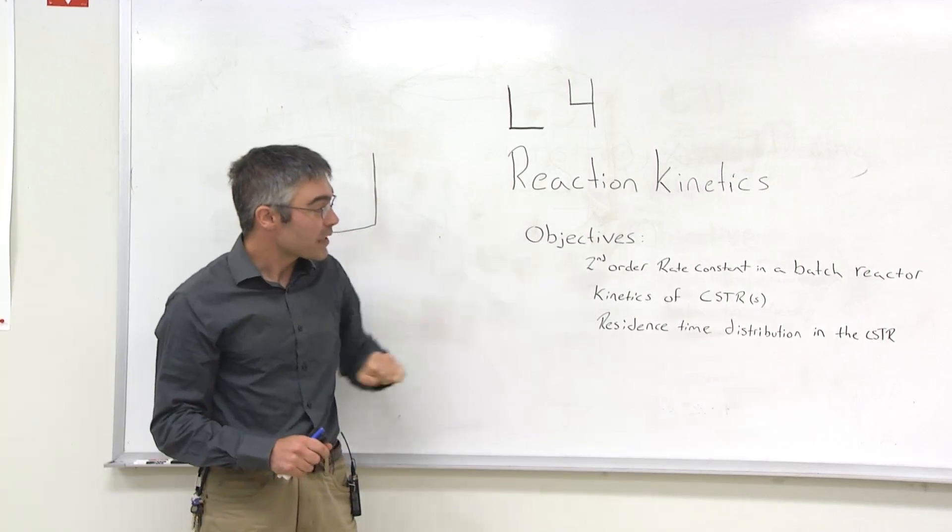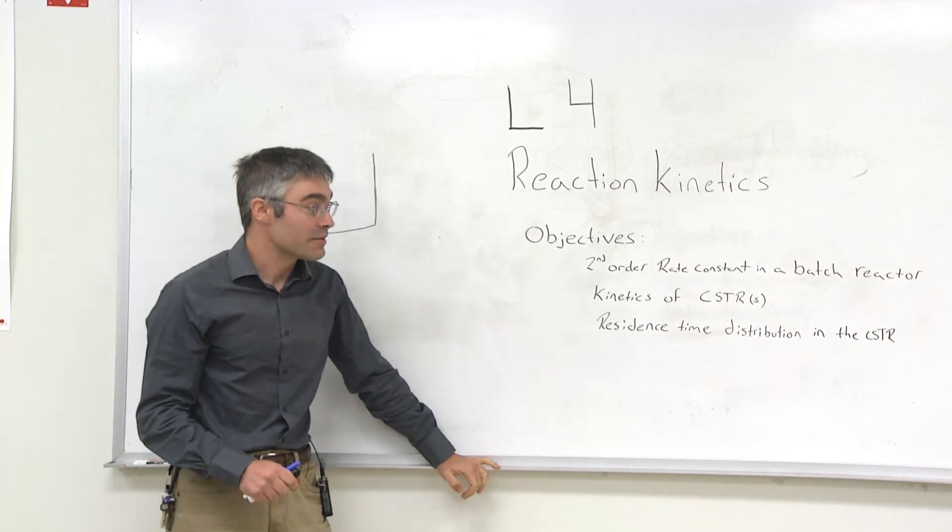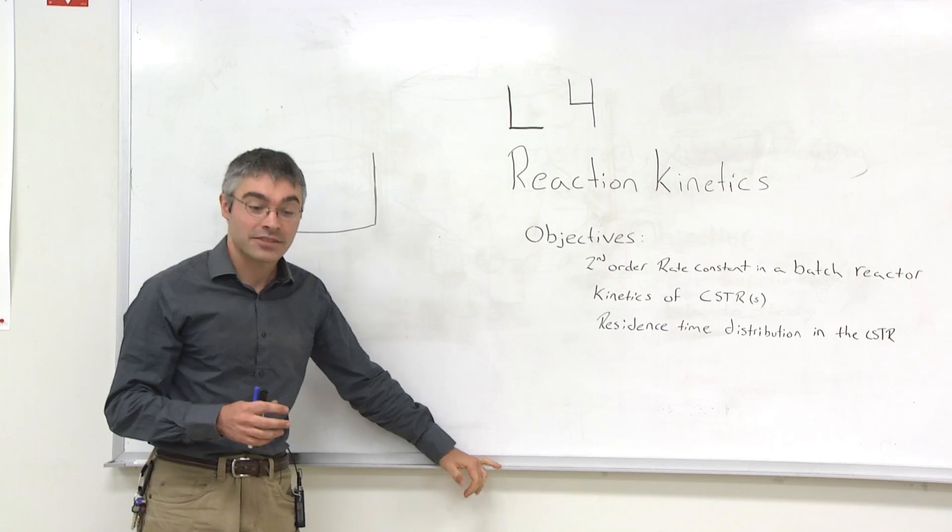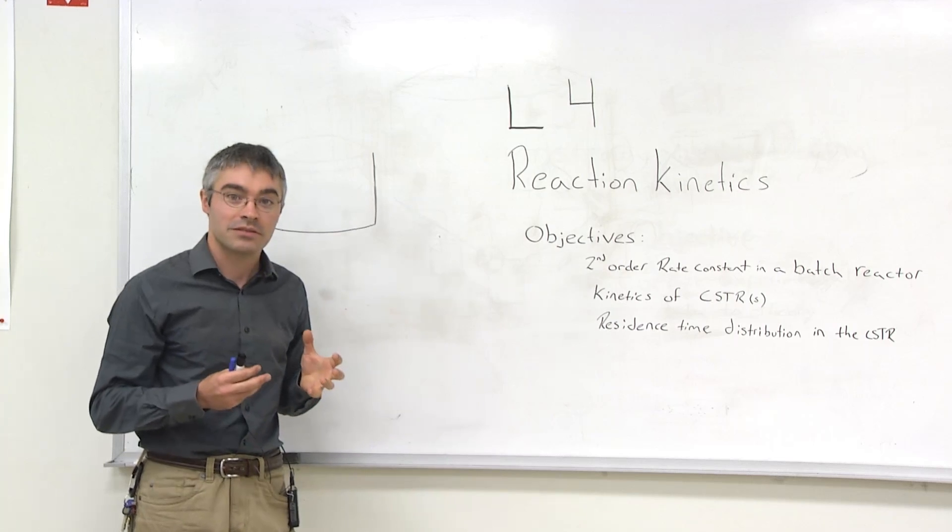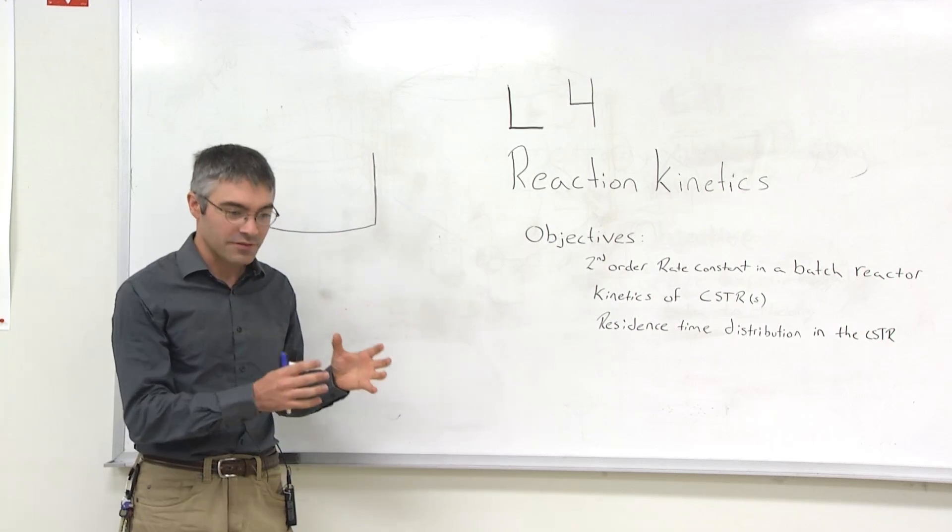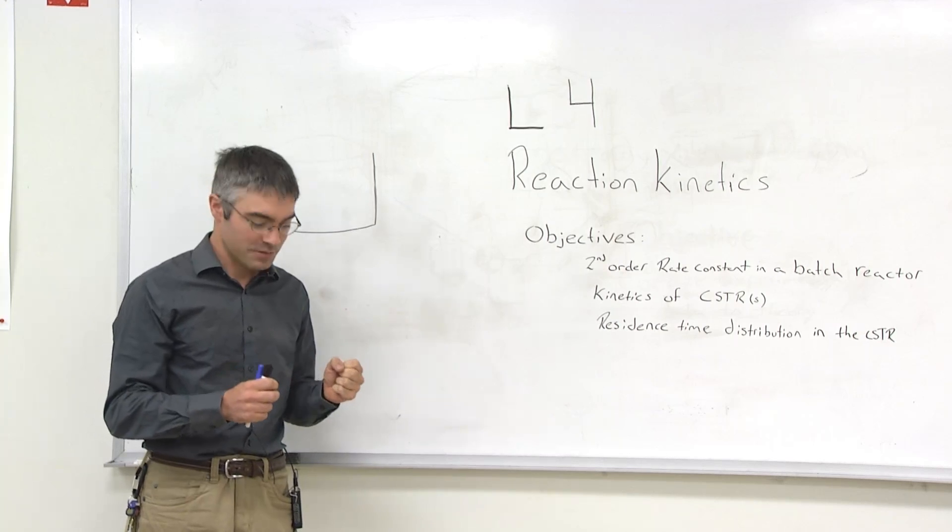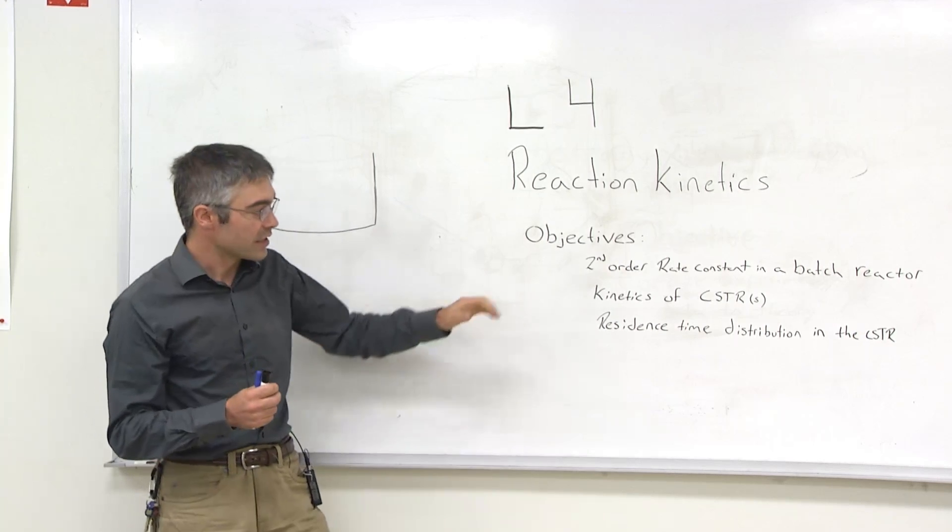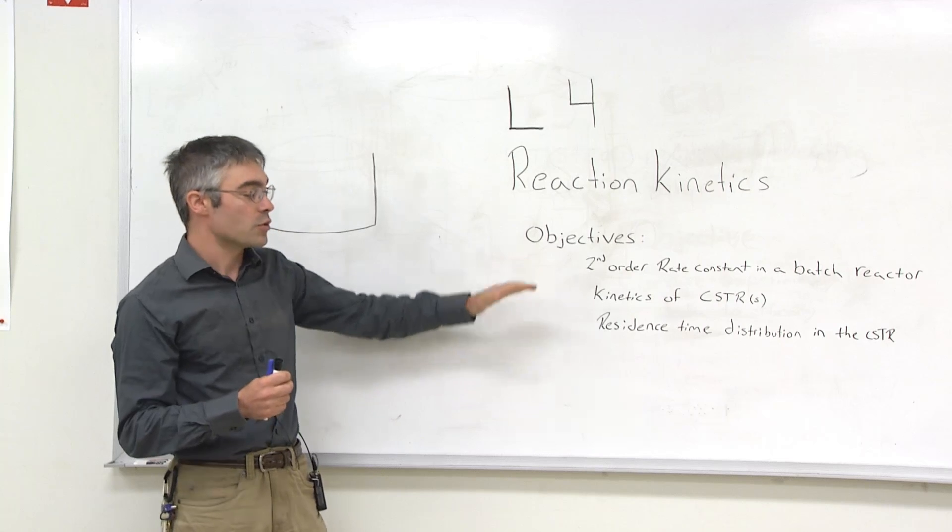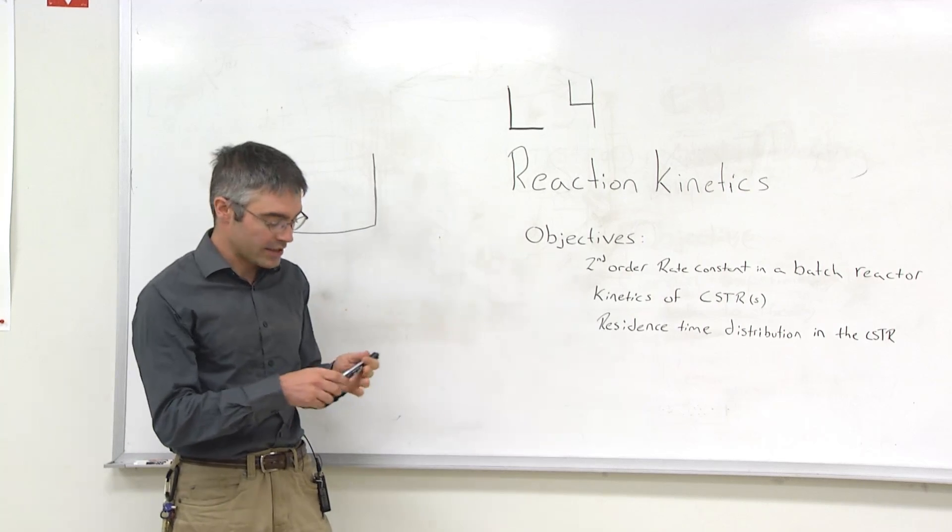The objective of the first experiment is to determine the second order rate constant in a batch reactor between two different components. We have crystal violet, which is a very purple, very dark colored solution that's very dilute, and then we have a more concentrated solution of sodium hydroxide.